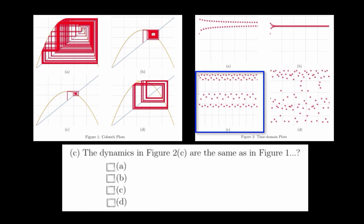The dynamics seen in Figure 2C in the time domain plot is a high-period orbit. You may want to confuse this with a chaotic orbit, but look how structured it is. As you can see, it repeats very regularly. This corresponds to Figure 1D.